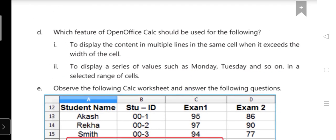D: Which feature of OpenOffice Calc should be used for the following? First, to display the contain in multiple lines in the same cell when it exceeds the width of cell. Answer is wrap text, W-R-A-P T-E-X-T.